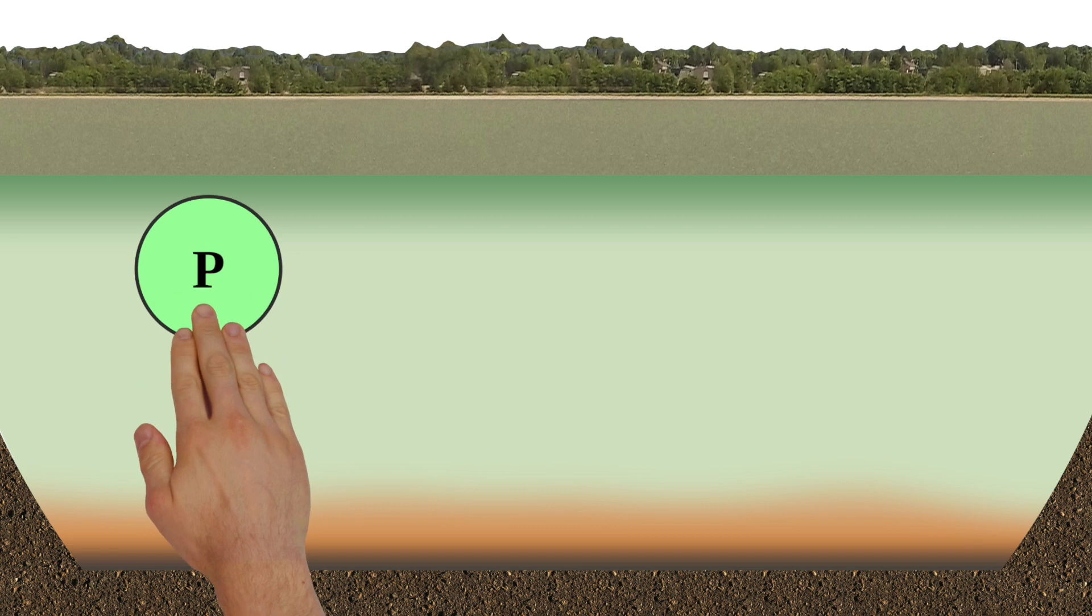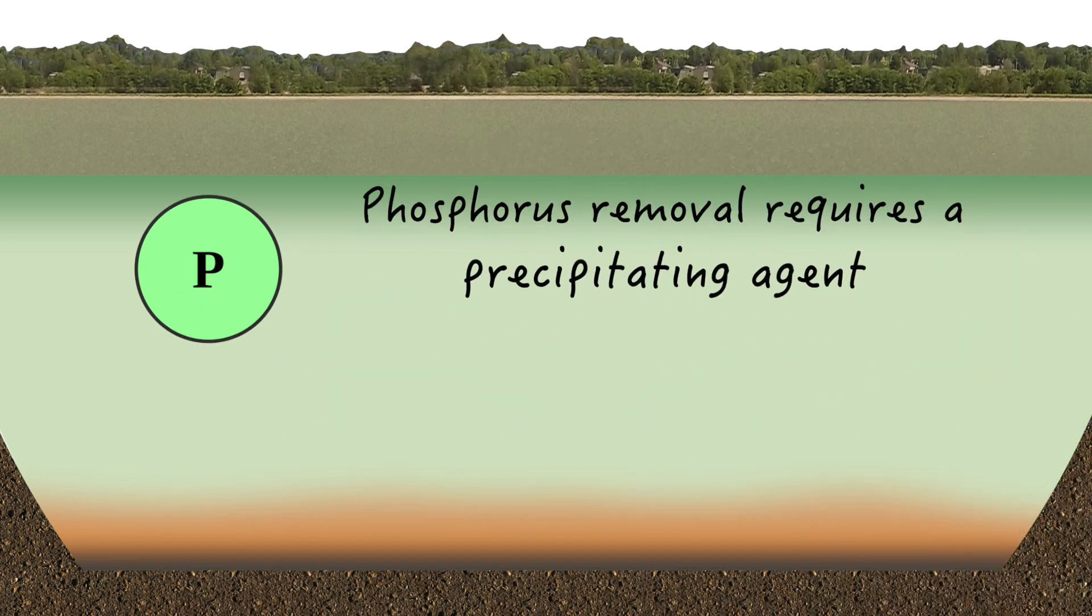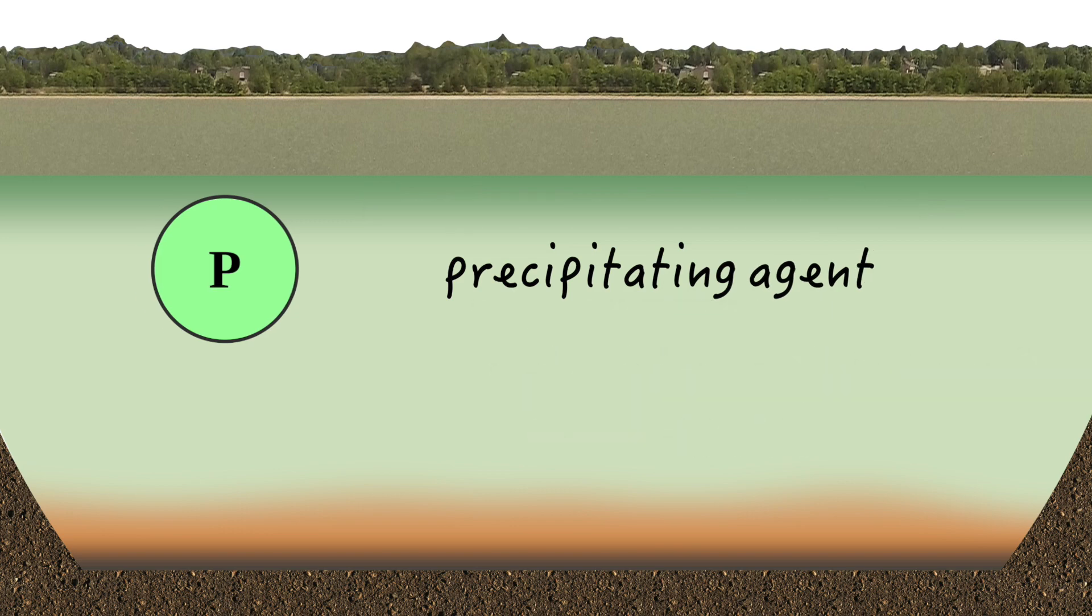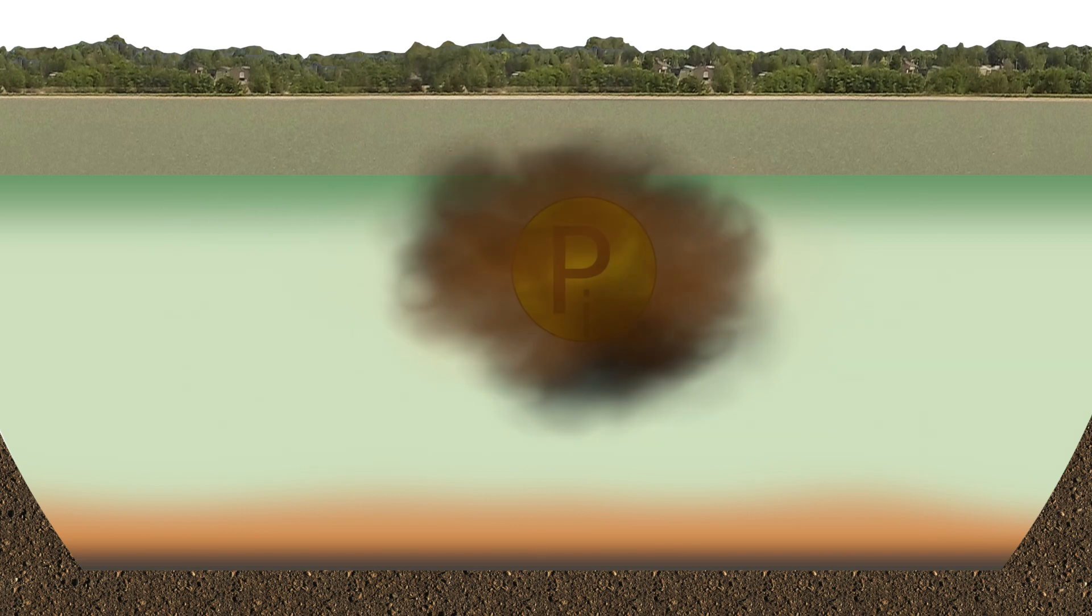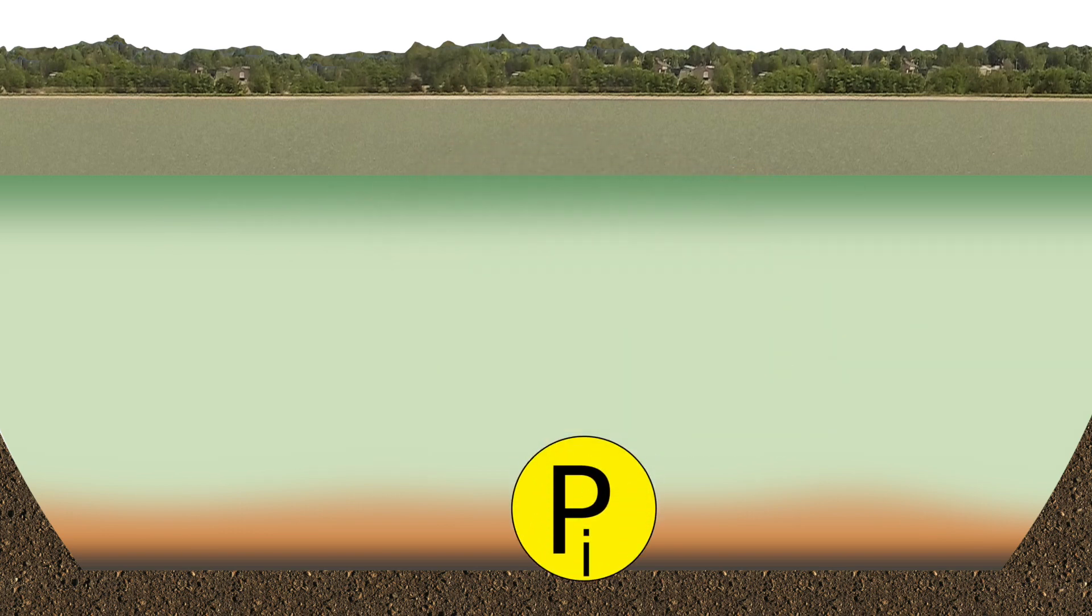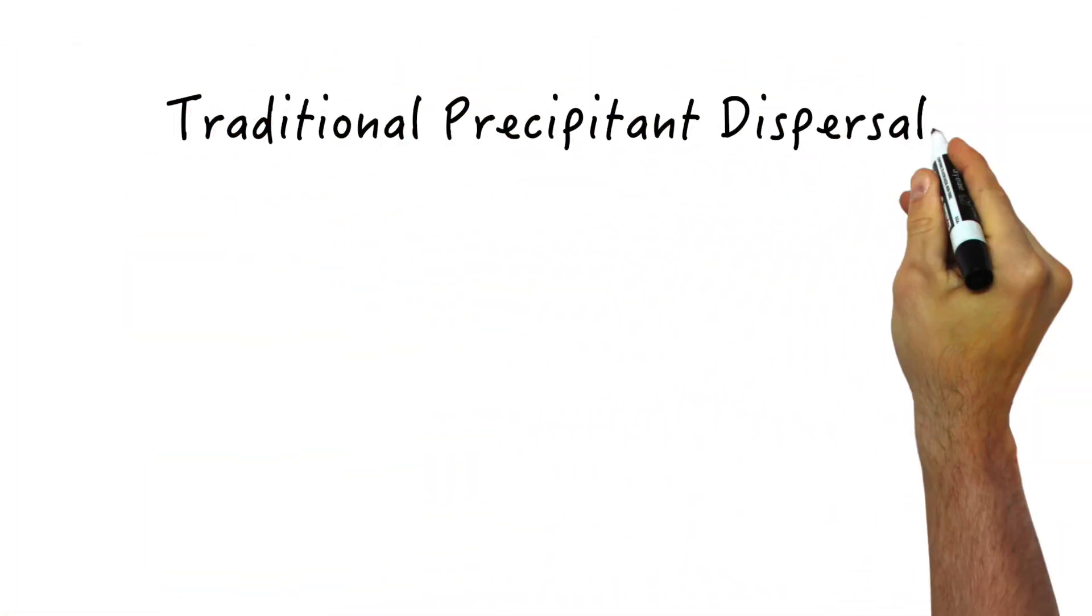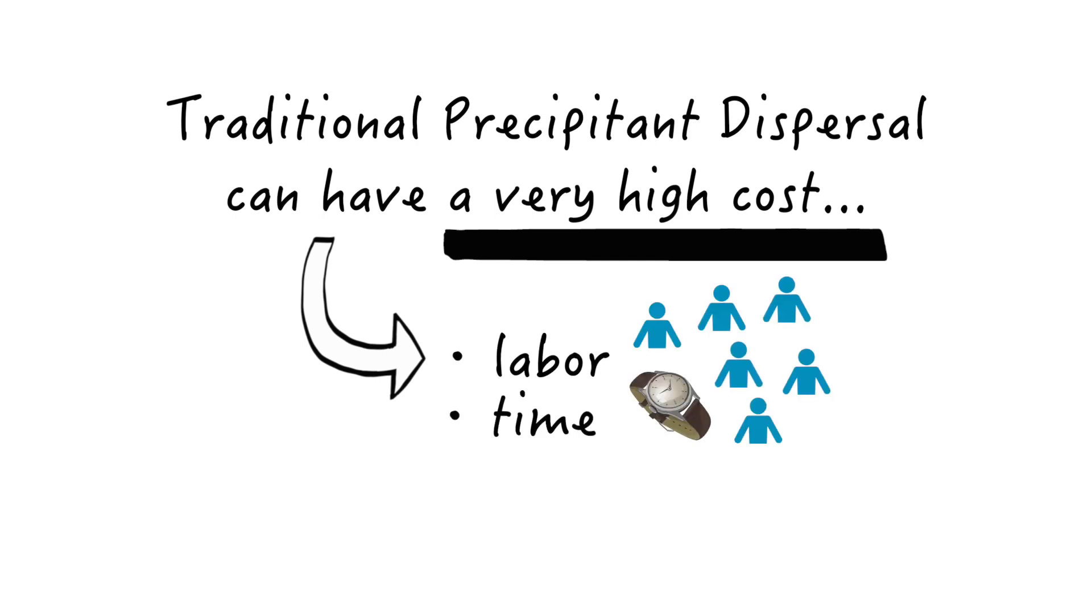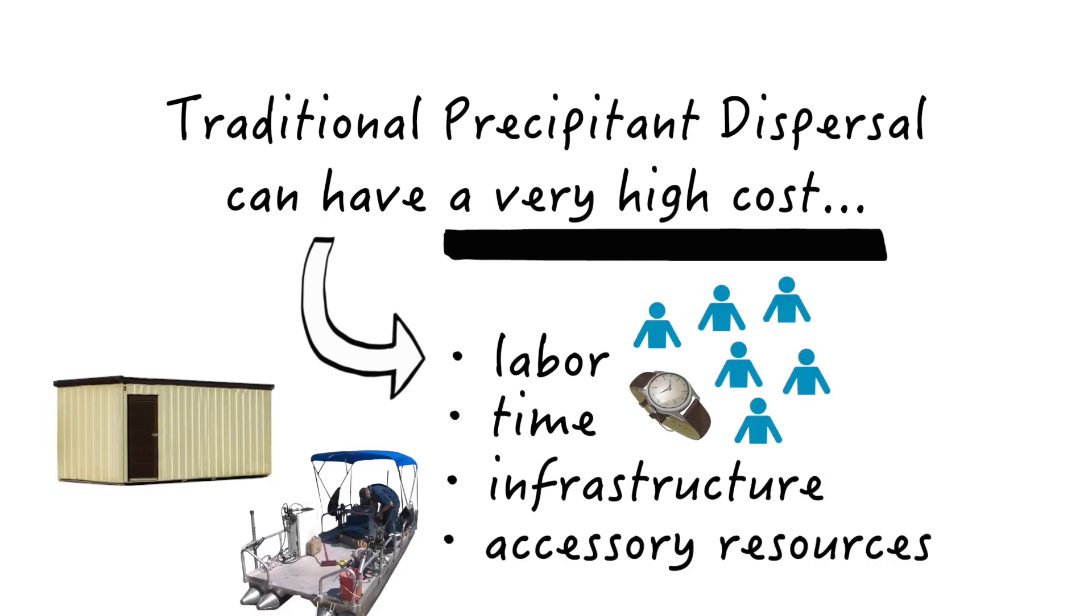So let's get our removal on. Phosphorus can be removed from a lagoon by applying a precipitating agent like aluminum sulfate or ferric chloride. Once precipitated, the phosphorus harmlessly falls out of the water column and into the sludge sediments. Precipitant dispersal is a very hands-on and costly process requiring extensive labor, time, infrastructure, and accessory resources.